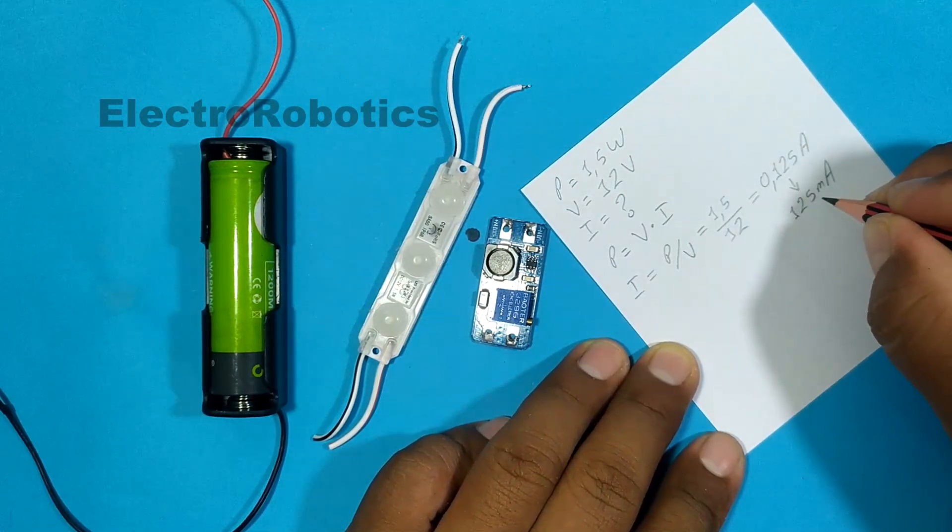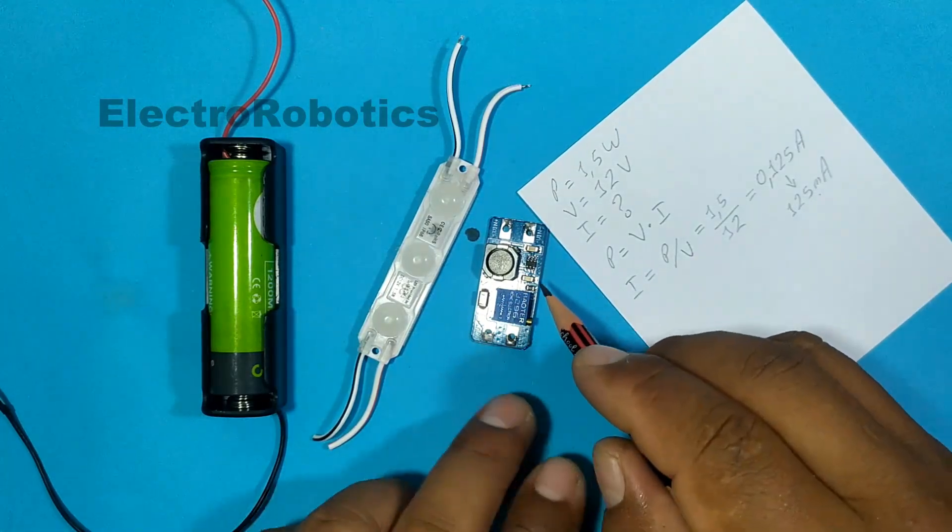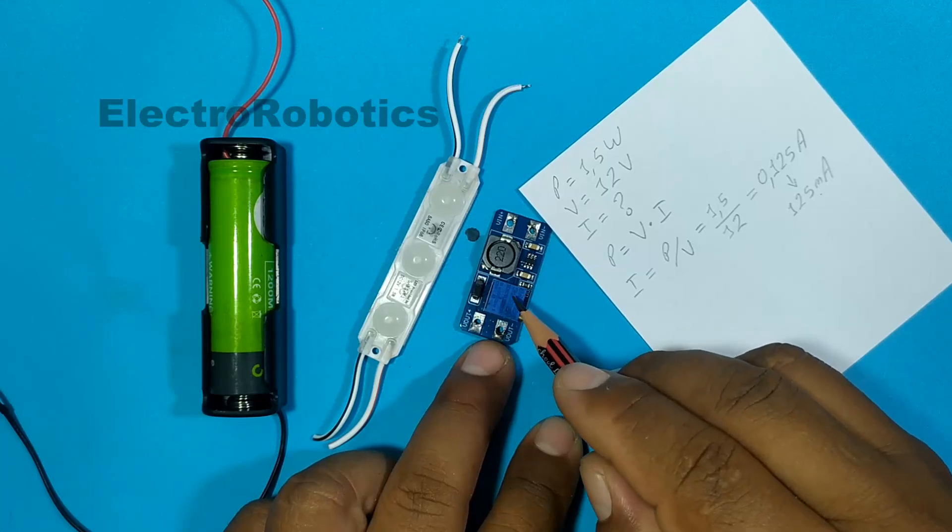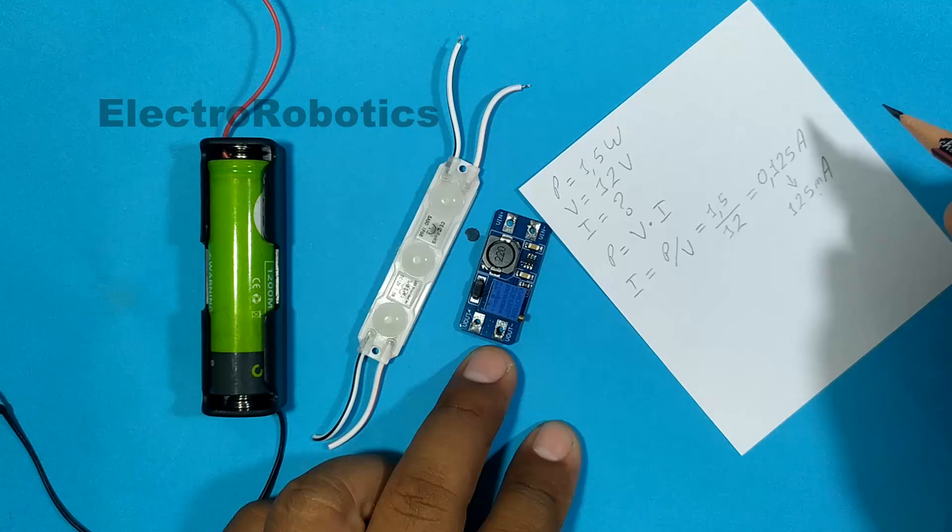This would be the current that the LED module is going to consume. Our voltage booster module can deliver up to 2 amps. And 0.125 is quite low.